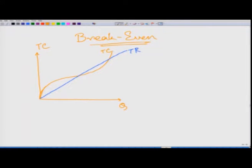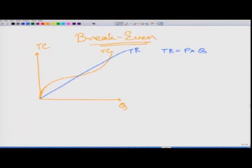Total revenue is the product of price and quantity. If price remains fixed with a rise in quantity being produced, it is going to be a straight line through the origin. The total cost curve has curvature — it increases, flattens, and then increases at an increasing rate again.